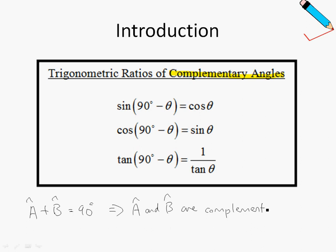So two angles that add up to 90 degrees are complementary. From this definition of complementary angles, we can derive these three identities you see here on the screen. Sine 90 degrees minus theta equals cosine theta. Cosine 90 degrees minus theta equals sine theta. And tangent 90 degrees minus theta equals 1 over tangent theta, which can also be called cotangent theta.